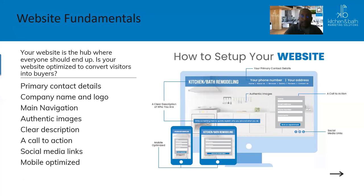You also need your company name and logo clearly visible at the top, plus main navigation tabs — About Us, Portfolio, Contact, Services, etc. Use authentic images of you, your team, and your projects. Have a clear description — a sentence or statement — that lets visitors know immediately what you do, whether that's Mediterranean design, modern design, or whatever your specialty is. This should be placed in the 'above the fold' area, meaning what's visible before scrolling.